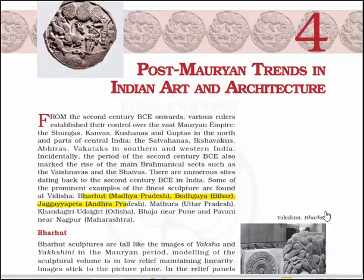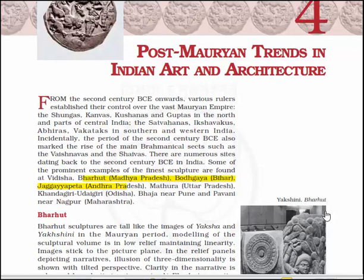From the 2nd century BC onwards, various rulers established their control over the vast Mauryan Empire. The kingdoms or empires like Shungas, Kawas, Kushanas and Guptas in the northern and central India, and Satavahanas, Ishwakus, Agnilas, Vakatakas in southern and western India emerged.